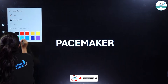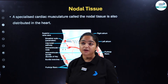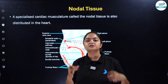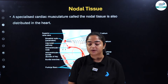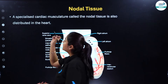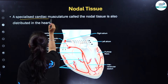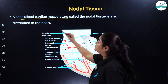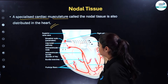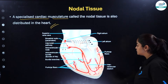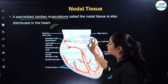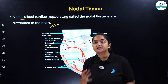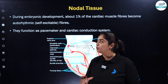We are basically going to talk about the pacemaker, and for that we need to understand a few terminologies included in the topic. We'll start with nodal tissue. Nodal tissue is a specialized cardiac musculature, and it is distributed in the heart. If you look at this diagrammatic representation, the fibers which you are going to see here — these musculature fibers are basically the nodal tissue.